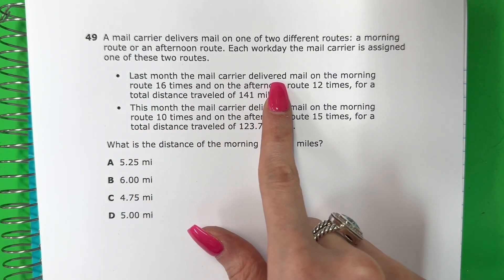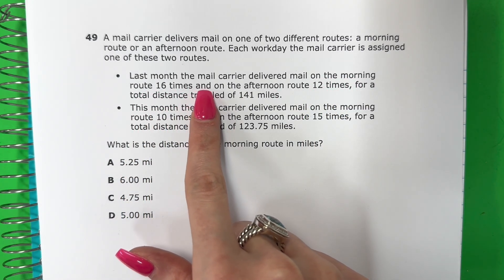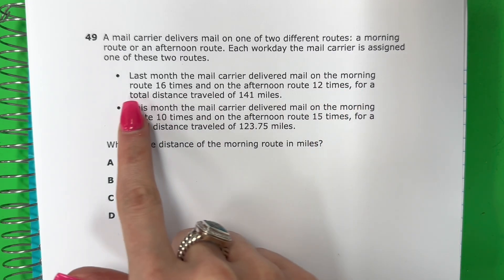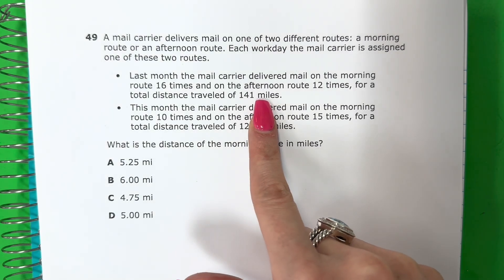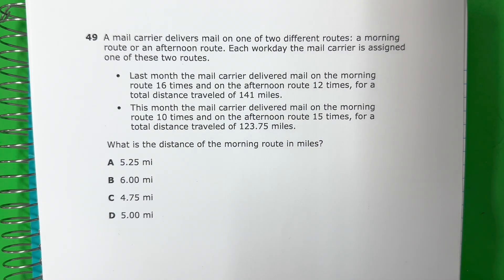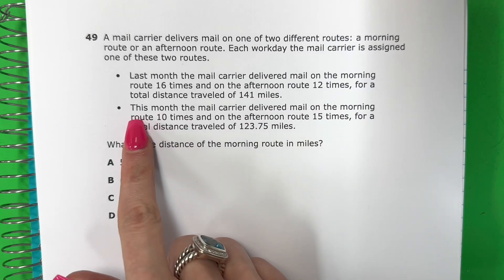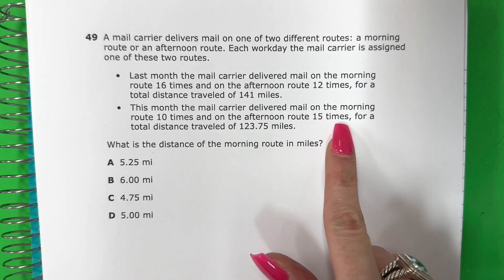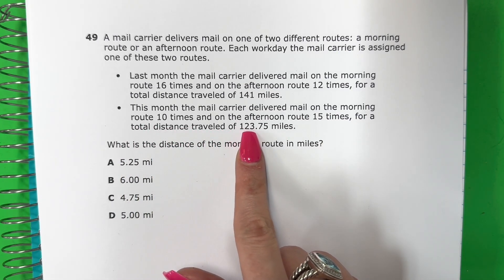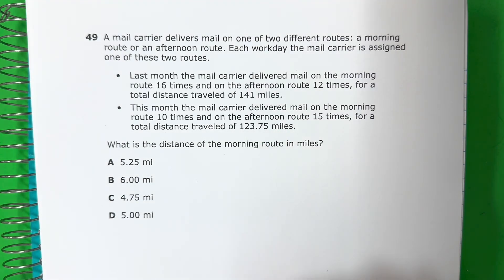Last month, the mail carrier delivered mail on the morning route 16 times and on the afternoon route 12 times for a total distance traveled of 141 miles. El mes pasado, el cartero entregó el correo en la mañana ruta 16 veces y por la tarde ruta 12 veces, por una distancia total recorrida de 141 millas. This month, the mail carrier delivered mail on the morning route 10 times and on the afternoon route 15 times for a total distance traveled of 123.75 miles. Este mes, el cartero entregó el correo en la mañana ruta 10 veces y por la tarde ruta 15 veces, por una distancia total recorrida de 123.75 millas.